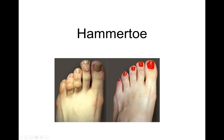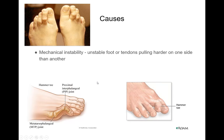Hammertoes can have these little knobby calluses on them from rubbing on the shoes. Typically, if you look at the anatomy, this is going to be the proximal interphalangeal joint — the proximal joint — and this is the distal joint. Most of them, when they're curved down, are going to cause rubbing on the sides of the shoe.